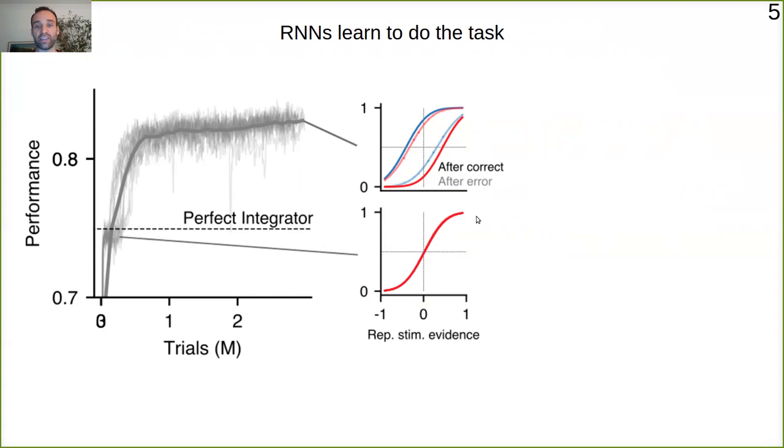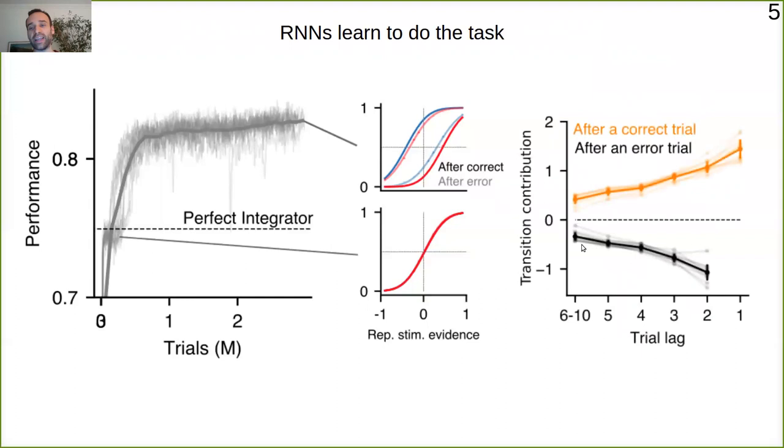You can see here the psychometric curves. At the beginning there is no trial history, and in the end there is this switch strategy that I was explaining before in which after an error the bias is temporarily reversed. This can be seen again in these kernels, in which now the black traces towards negative, which means that after error trials transitions contribute to the decision of the network.